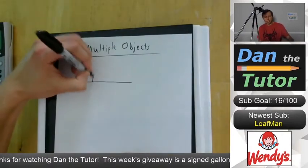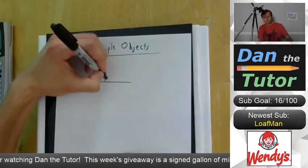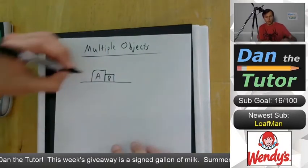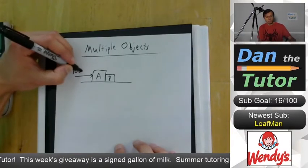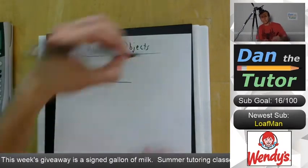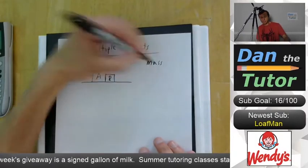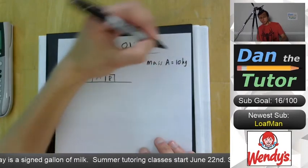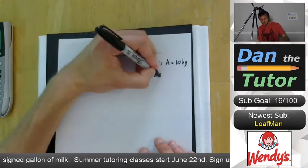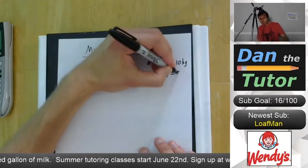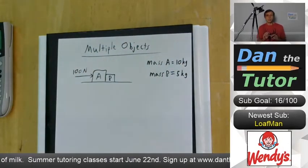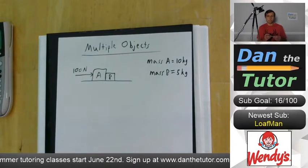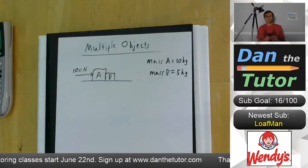Let's jump into an example. We have crate A touching crate B, with a 100 Newton force acting on crate A. The mass of A is 10 kilograms and the mass of B is 5 kilograms. What's important is that we have a 100 Newton force acting on box A, and box A is touching box B, and both of them are accelerating to the right.